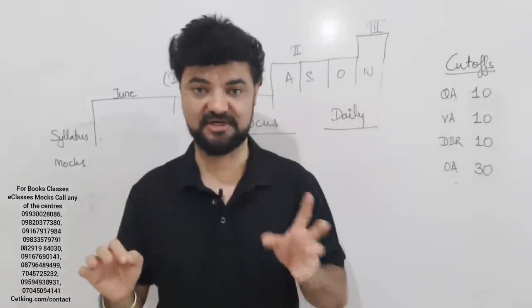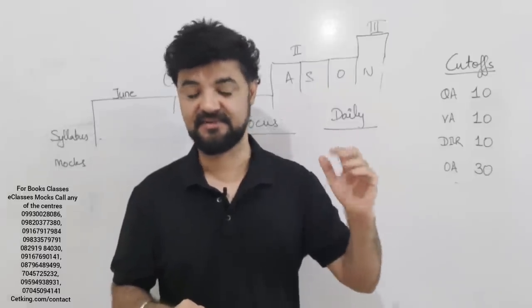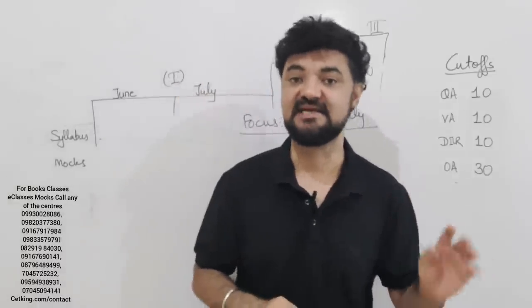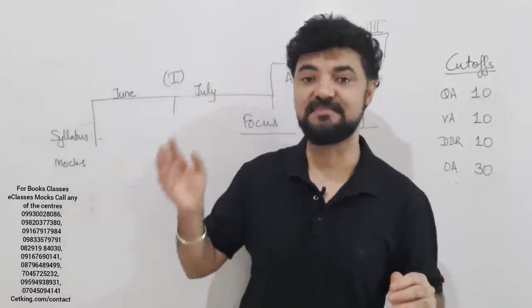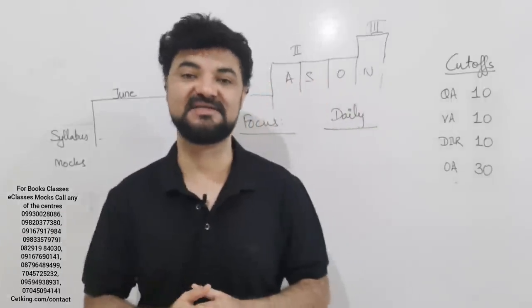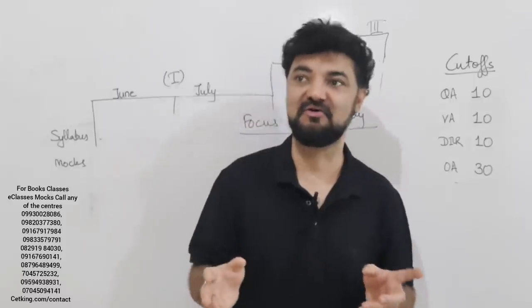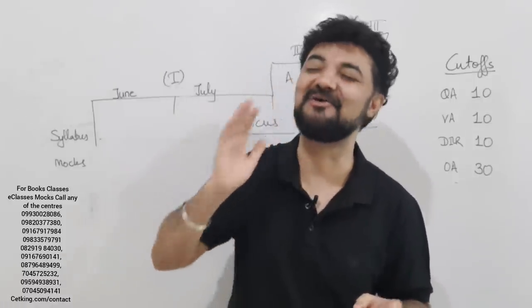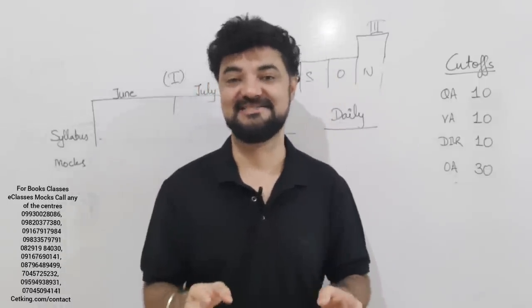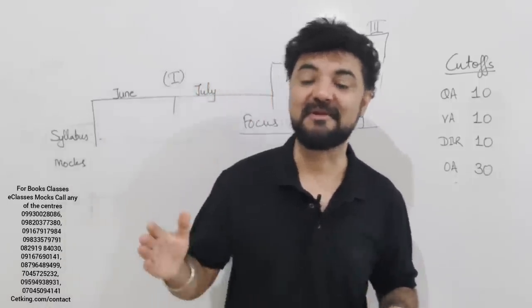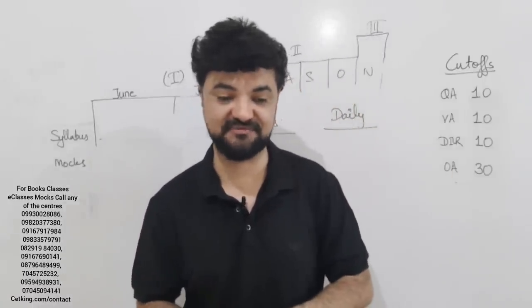95 percentile. If you want the call from main IIMs, Shillong, Kozhikode as well, then 99, 95, 99. If you want the call from ABC, we have to target 99.6. Why the cutoff is so high for engineers? Because of engineers. Most of the toppers are engineers. 10 out of 9. I am talking like Rahul Gandhi now, 9 out of 10, 9 toppers are engineers.